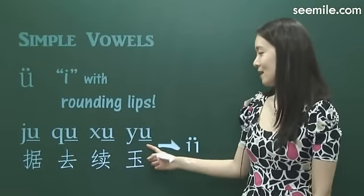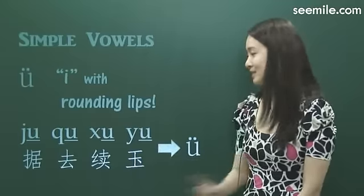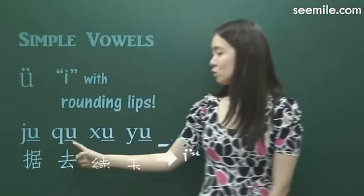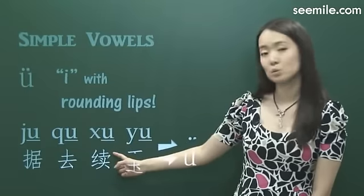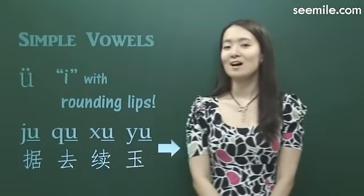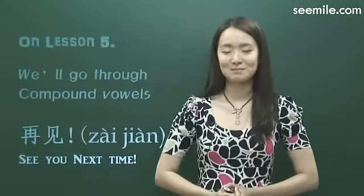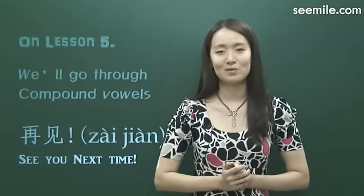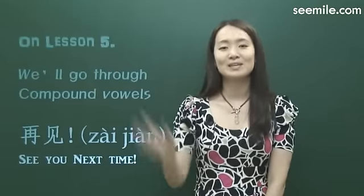So 呜 with 吉, 西, 伊 sounds like 呜. Please listen and repeat: 呜, 呜. Next we're going to talk about compound vowels. Thank you very much and see you next time. 再见.